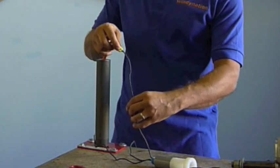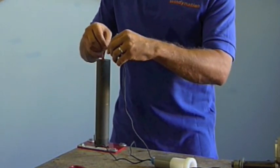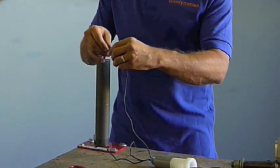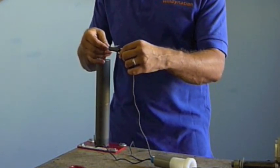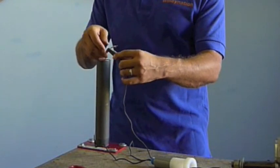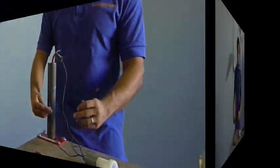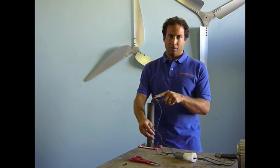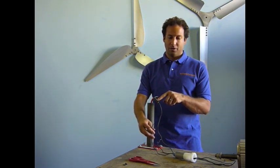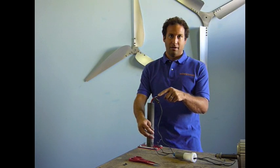After you do that, slide your shrink tubing over the connection. Use a heat gun or if you don't have a heat gun you can use a blow dryer, and shrink the shrink tubing onto the connection. And after you do that, you've got two more wires coming out of this slip ring, two more wires coming out of the tower, and you just do the same thing for the other two wires.